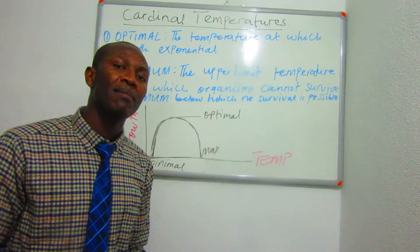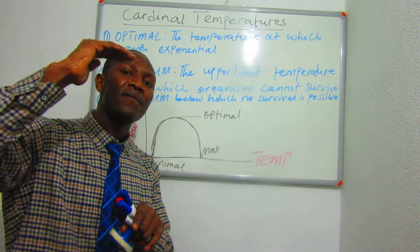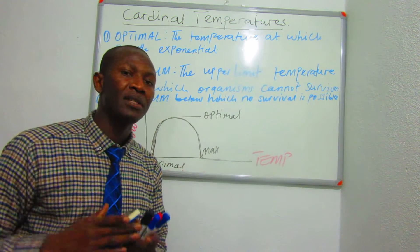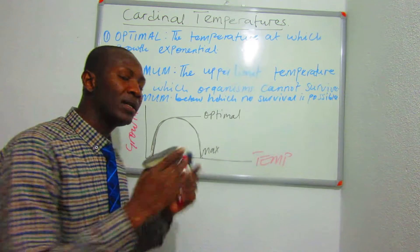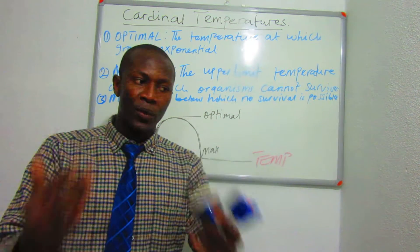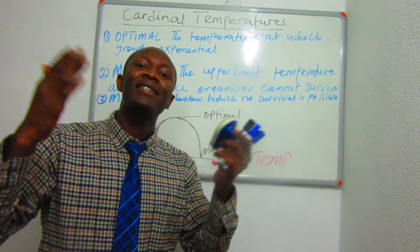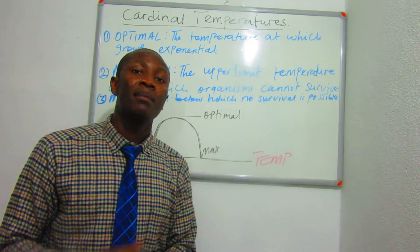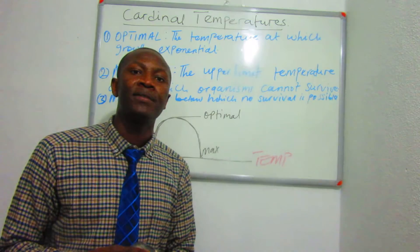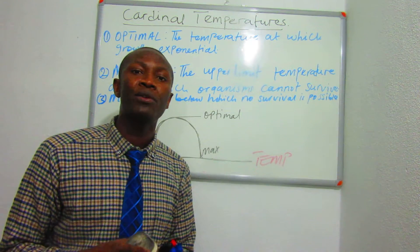The second cardinal temperature is the maximum temperature — the temperature above which life is impossible for those particular organisms. For example, if we as humans were taken to Antarctica, there are regions where we would never be able to live. That represents the maximum temperature limit.